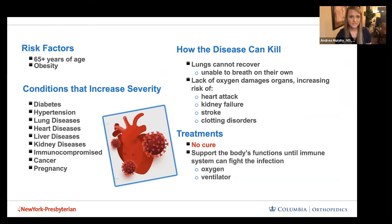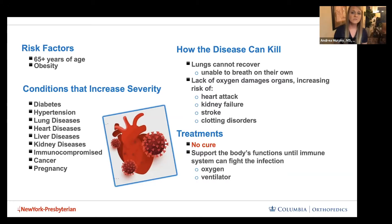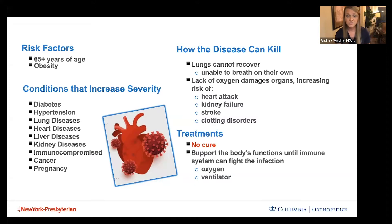Risk factors for severe disease include age 65 and older, obesity, diabetes, and hypertension — conditions not typically characterizing our athletes and students. However, children going to school and playing sports can bring germs home to parents, grandparents, and other loved ones. The disease itself causes lung difficulty and impairs oxygen intake. Essentially, we support the body's function while the immune system fights off the disease.